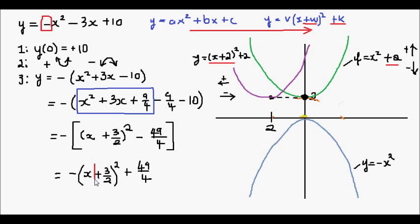So in our case, the vertex point or turning point is going to be the negative of 3 on 2 and it's going to be 49 on 4.